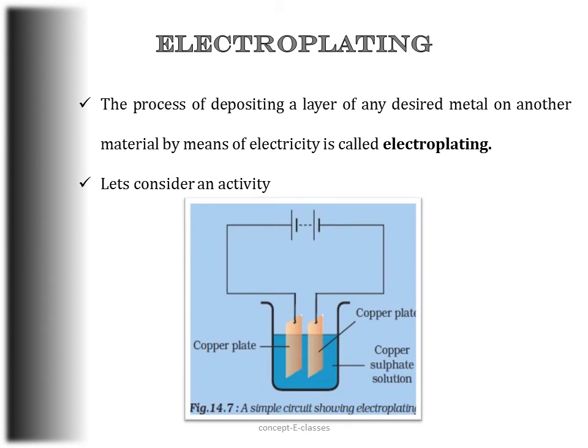The last topic of this chapter is electroplating. If we scratch the shiny handlebar of a new bicycle, we can see the shiny coating come off revealing a less shiny surface beneath. Similarly, with repeated use of certain gold ornaments, the gold coating wears off revealing silver or another metal beneath. In both cases, one metal has a coating on another metal. The process of depositing a layer of any desired metal on another material by means of electricity is called electroplating.